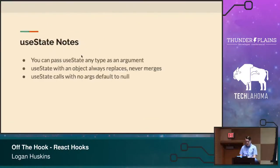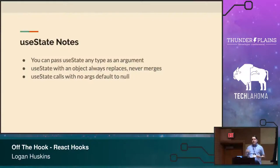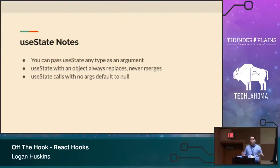A couple notes about useState: you can pass it any type as an argument — an empty string, a number, an array, an object, or nothing, which defaults to null. But you need to be careful — useState always replaces and never merges. When you call this.setState in a class component, if you're only updating one of seven or eight things, setState merges your old state with your new state. useState doesn't do that — it replaces the entire object. Because of this, it's recommended that if you're tracking multiple things, you call multiple useStates. useState with no args defaults to null.